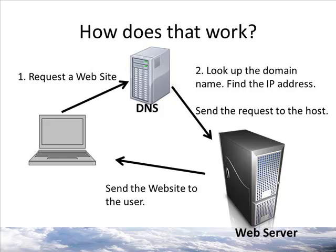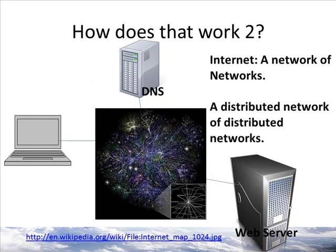This is a very simple diagram to show you how the internet works. From your computer, you request a website or some action simply by typing in the address or URL. Once you press enter, your message is sent to a domain name server. The DNS looks up the IP address — IP stands for Internet Protocol. Then the name server routes your message to the appropriate host. The host answers your request by sending you the web page you requested. Simple, right?